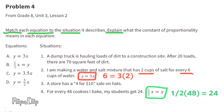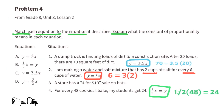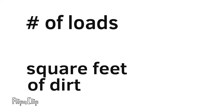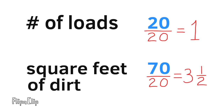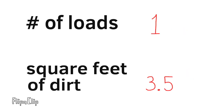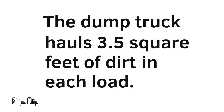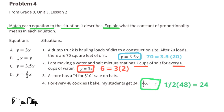Equation C matches situation 1: a dump truck hauling loads of dirt. After 20 loads there are 70 square feet of dirt. Dividing both by 20 gives 1 load and 3.5 square feet of dirt. So for every 1 load, there are 3.5 square feet of dirt — the dump truck hauls 3.5 square feet of dirt per load.